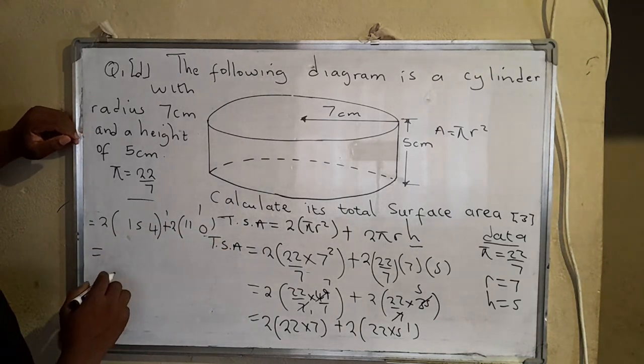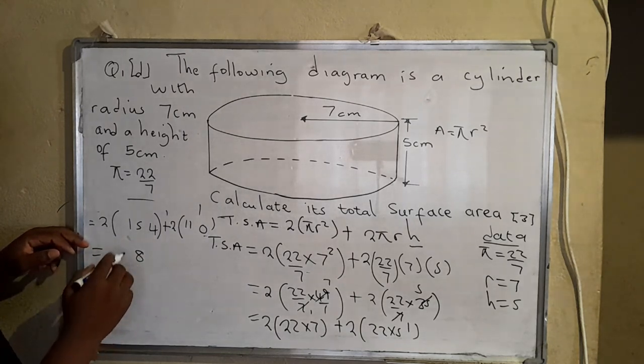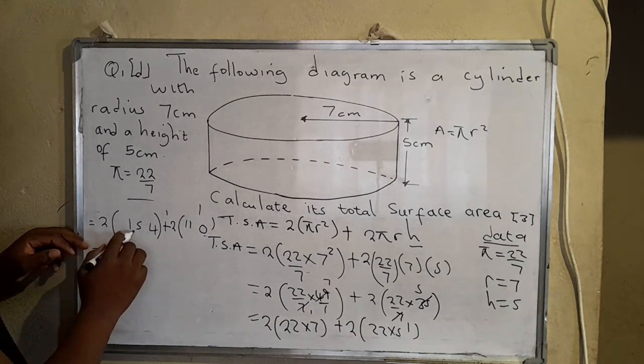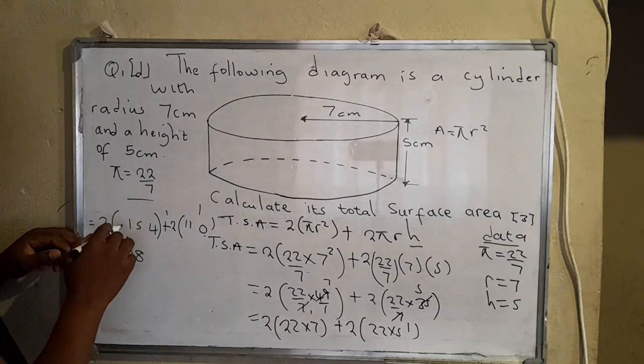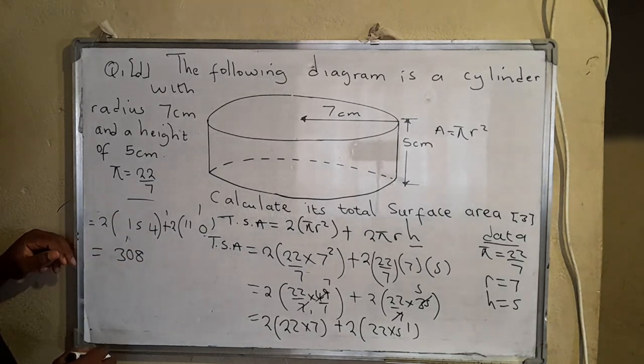So now the total surface area, 2 times 4, that's 8. 2 times 5, that's 10, you remember 1. Then 2 times 1, 2, plus that 1, that is 308.